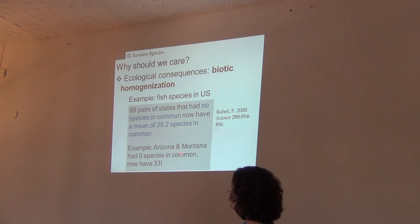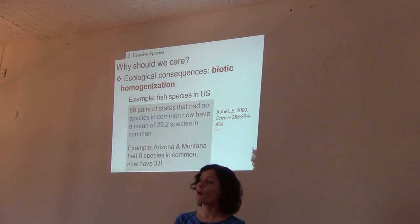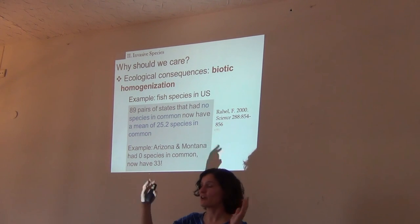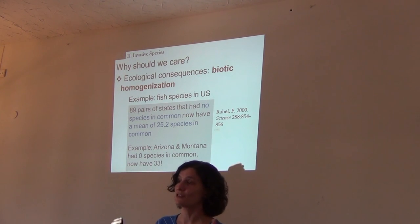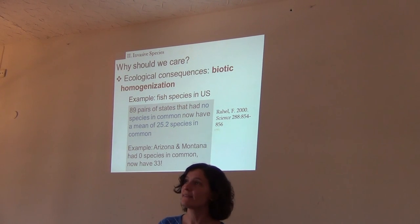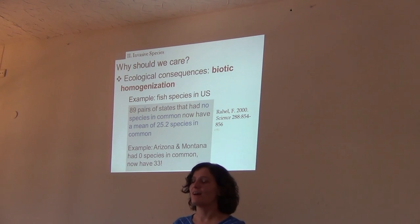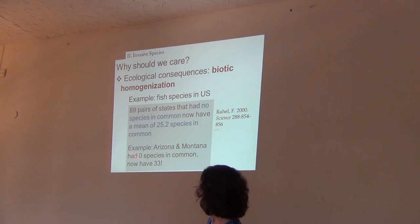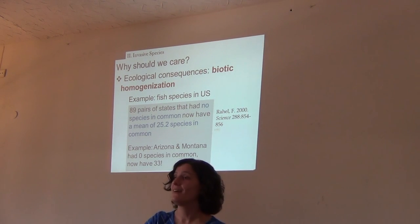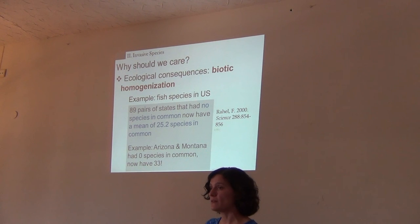One extreme example is Arizona and Montana, which historically had zero fish species in common and now share 33 species. This makes sense given their very different geographies: Arizona is a dry, high desert state, while Montana has high-altitude forests and cool environments. These states are far apart geographically, so it is no surprise they originally shared nothing — but human-facilitated introductions have given them 33 species in common.